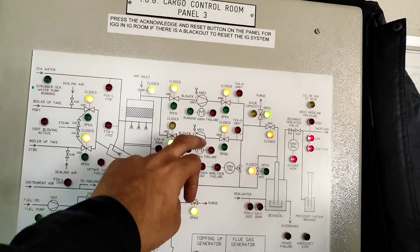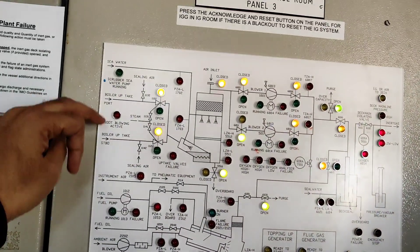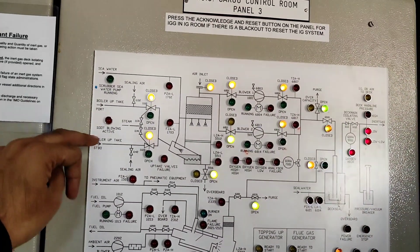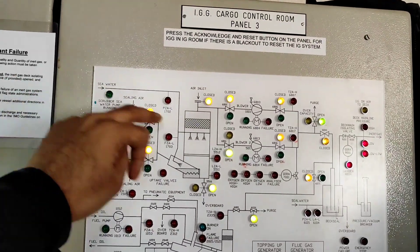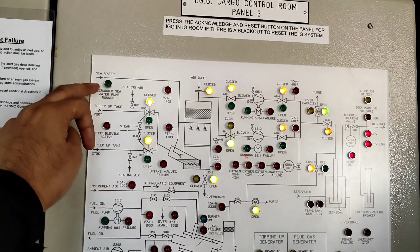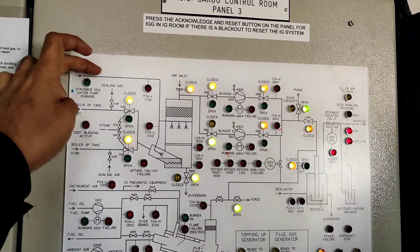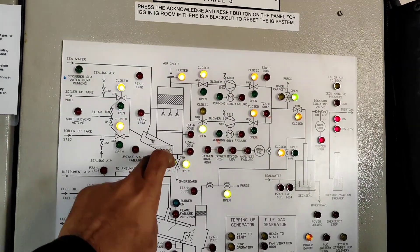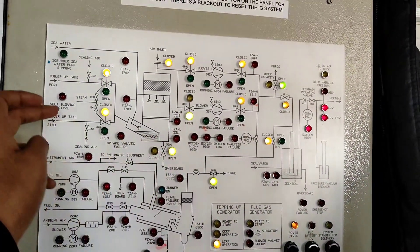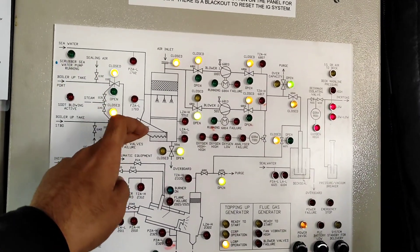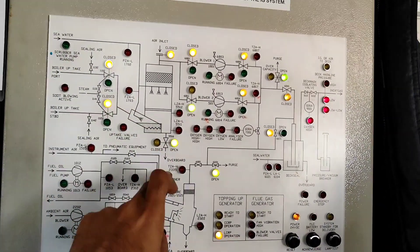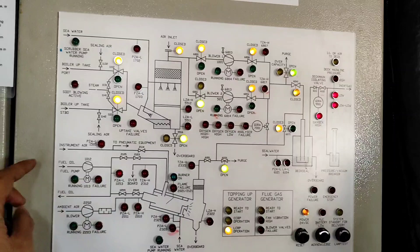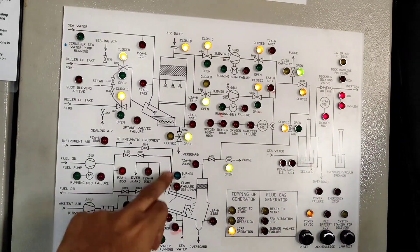So these two blowers, any blower you can run it and two boilers we have, so you can select any of the boiler. To have water in this you have a scrubber pump. Seawater will come and it will come here, spray also and then cleaning also.